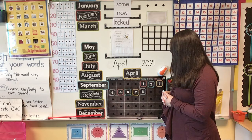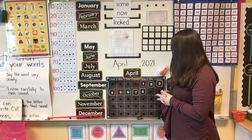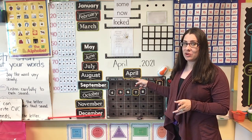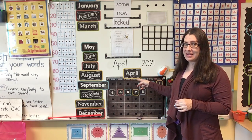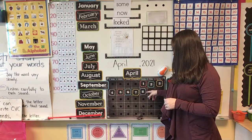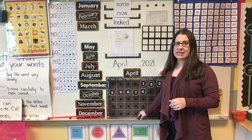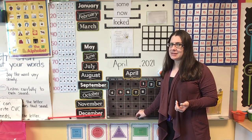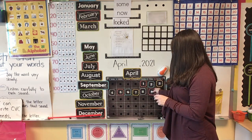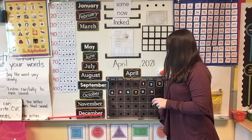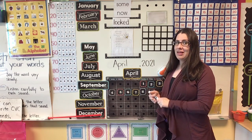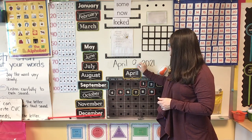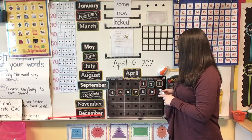What is the date today? When I look at our calendar, I see that we're in April, right? And yesterday was the 8th. So what's one more than eight? Nine. So today is April the 9th, 2021.